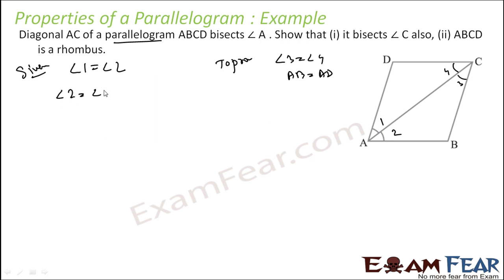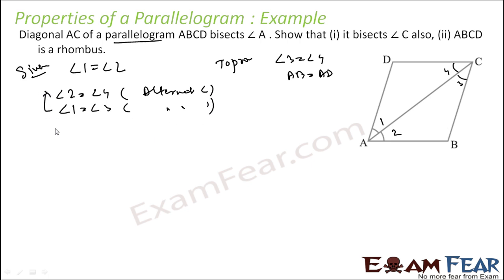Angle 2 is equal to angle 4 — alternate angles. And angle 1 is equal to angle 3 — also alternate angles. Now since angle 1 is equal to angle 2, angle 3 also has to be equal to angle 4. Since angle 1 equals angle 2, substituting: angle 3 equals angle 4. That is proved.